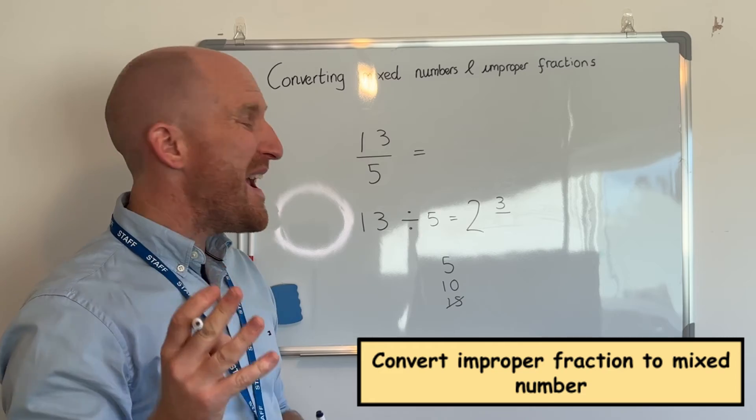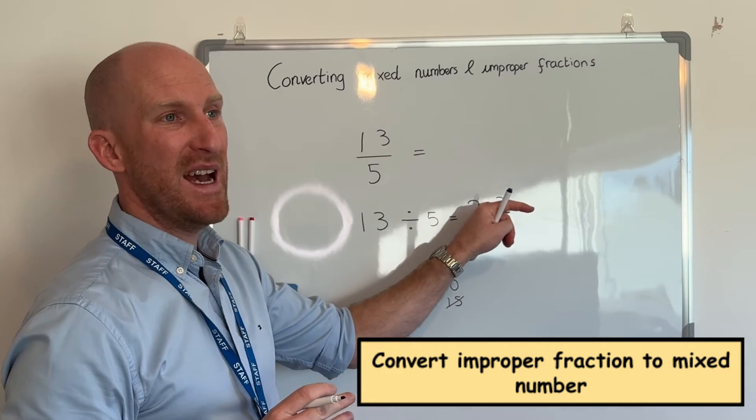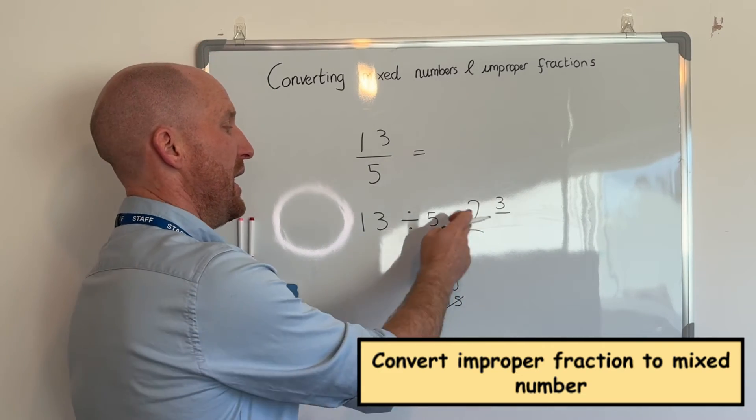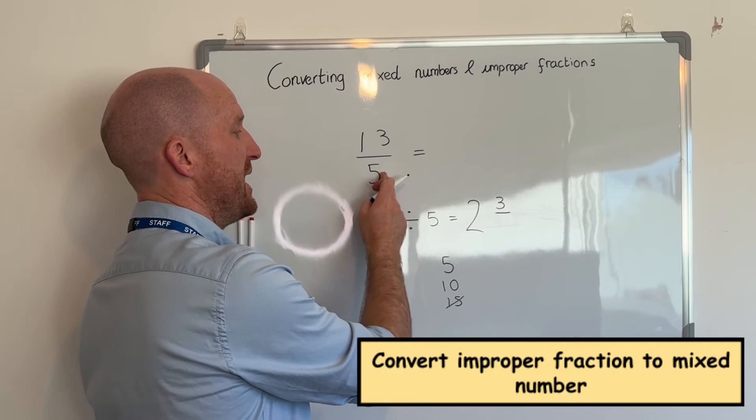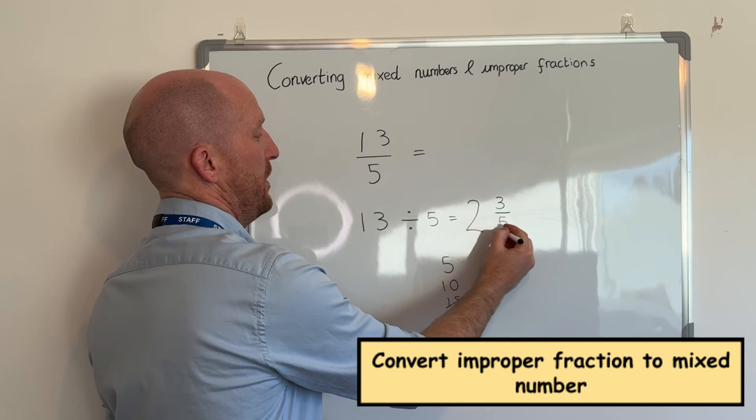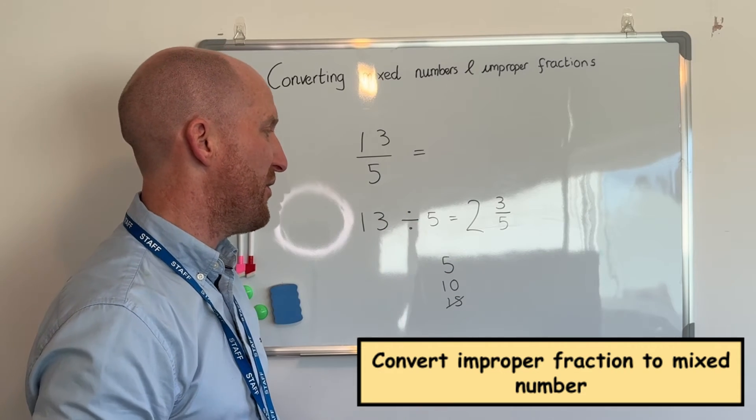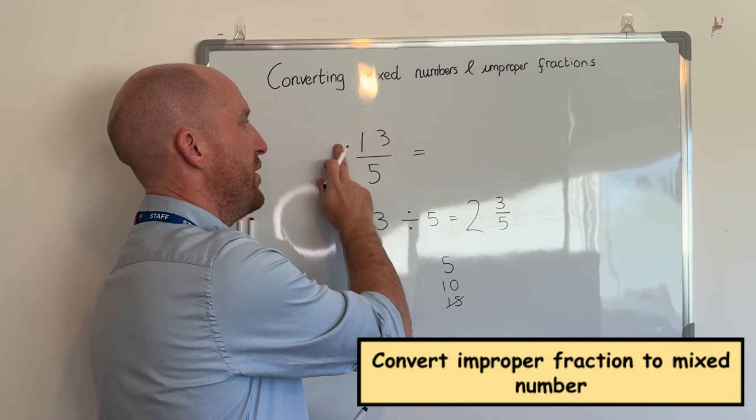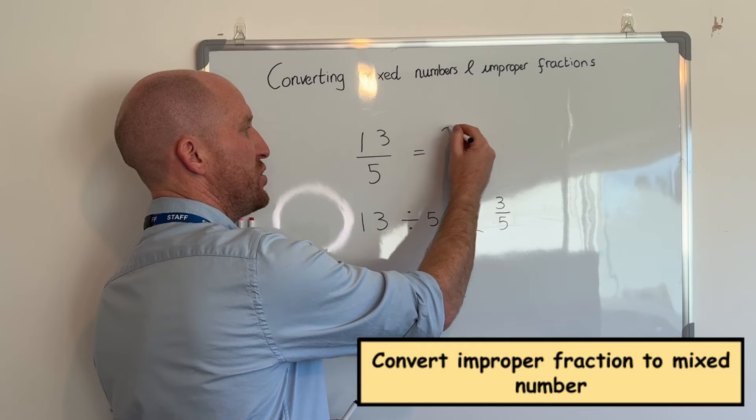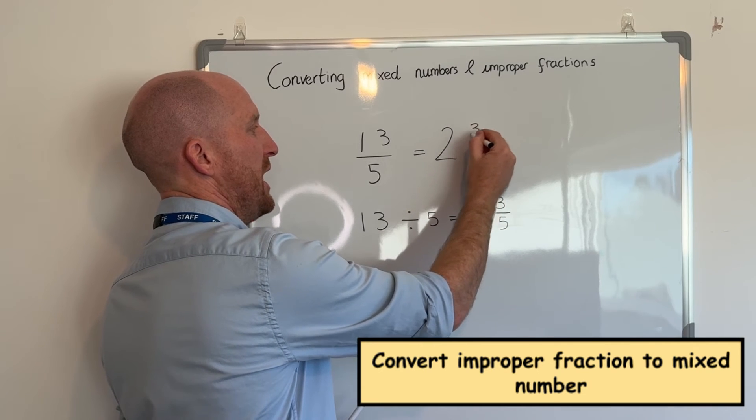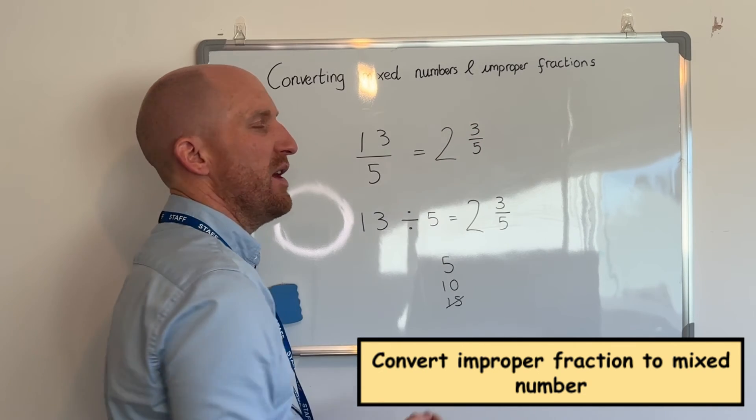And whatever the remainder is you put it as the numerator and then the denominator is made by whatever the denominator was from the improper fraction. So thirteen-fifths is the same as two whole ones and three-fifths.